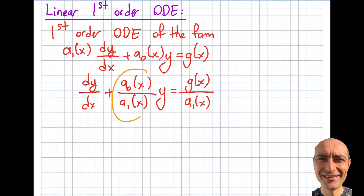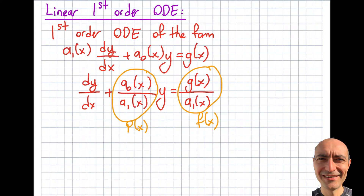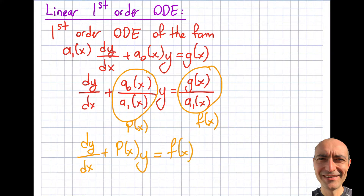y will be equal to g(x) divided by a1(x). I can combine these functions — dividing a function of x by another function of x — and call them P(x). I can do the same on the right and call it f(x). So if I write this neatly, I will get dy/dx plus P(x) times y equals f(x). This is the standard form.